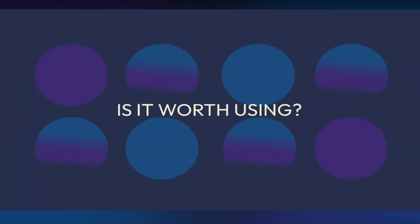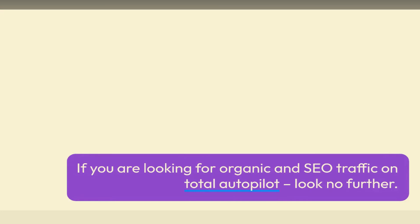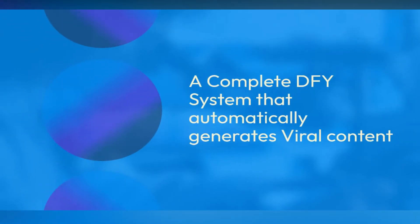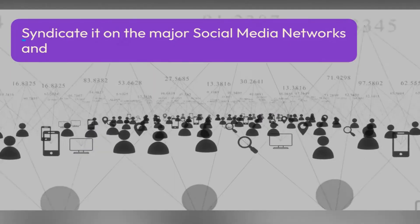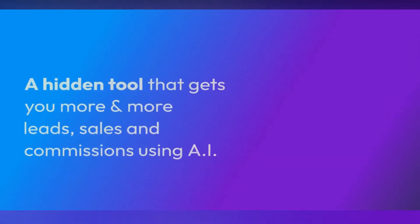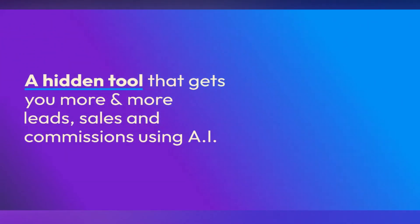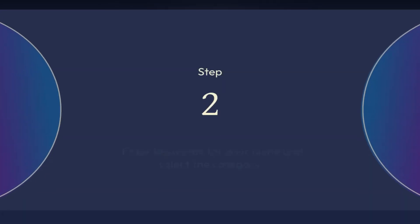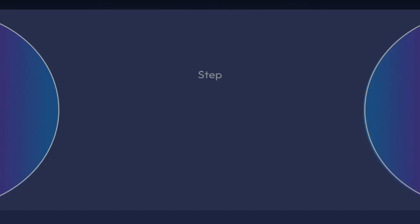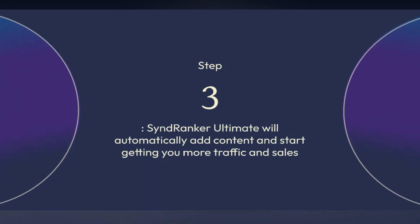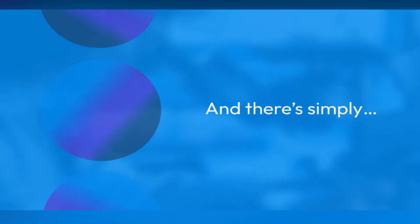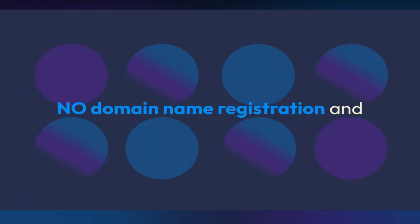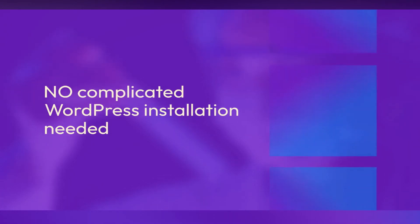Is it worth using? If you are looking for organic traffic on total autopilot, look no further. With SyndRanker Ultimate, you'll get a complete done-for-you system that automatically generates viral content, syndicates it on major social media networks, and uses a hidden tool to get you more leads, sales, and commissions using AI. All you need to do is log in, enter your details, enter keywords for your niche, and select the category. SyndRanker Ultimate will automatically add content and start getting you more traffic and sales — no hosting, no domain registration, and no complicated WordPress installation needed.